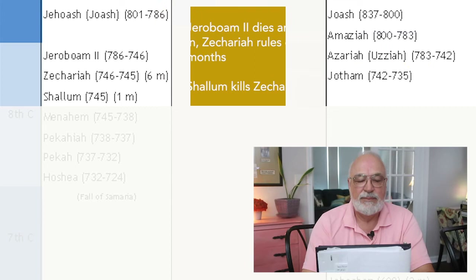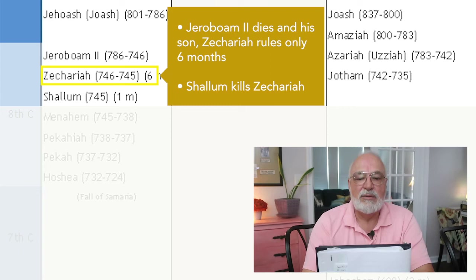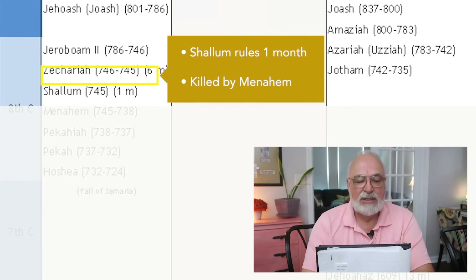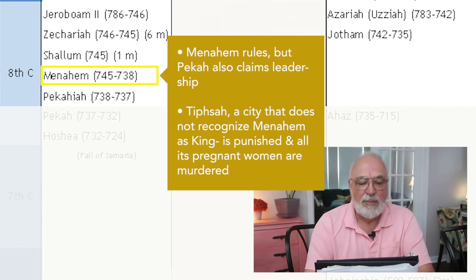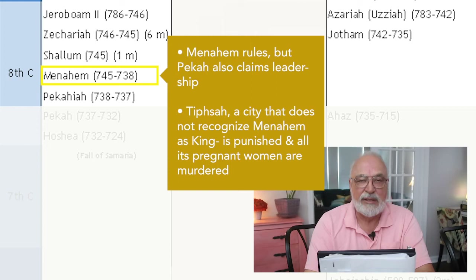Jeroboam II dies. His son Zechariah rules only six months and Shallum kills him. Shallum only rules one month and is killed by Menahem, the commander of the army. Menahem rules, but Pekah also claims leadership. Tisbah, a city that does not recognize Menahem, has Menahem punish them by killing all of the pregnant women.